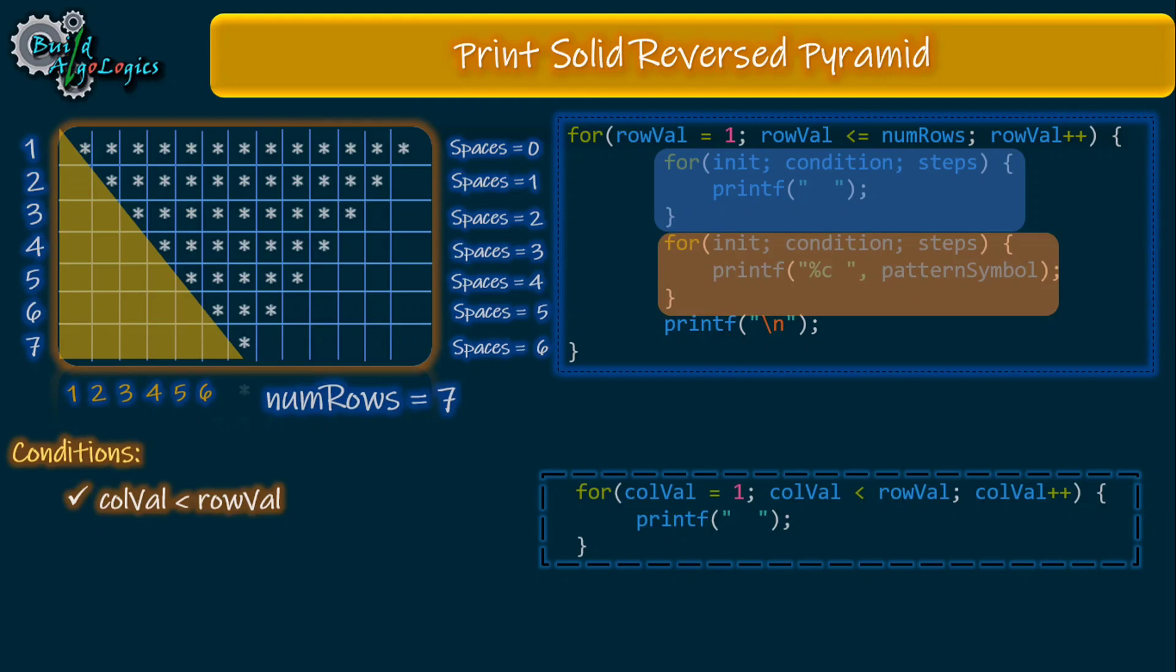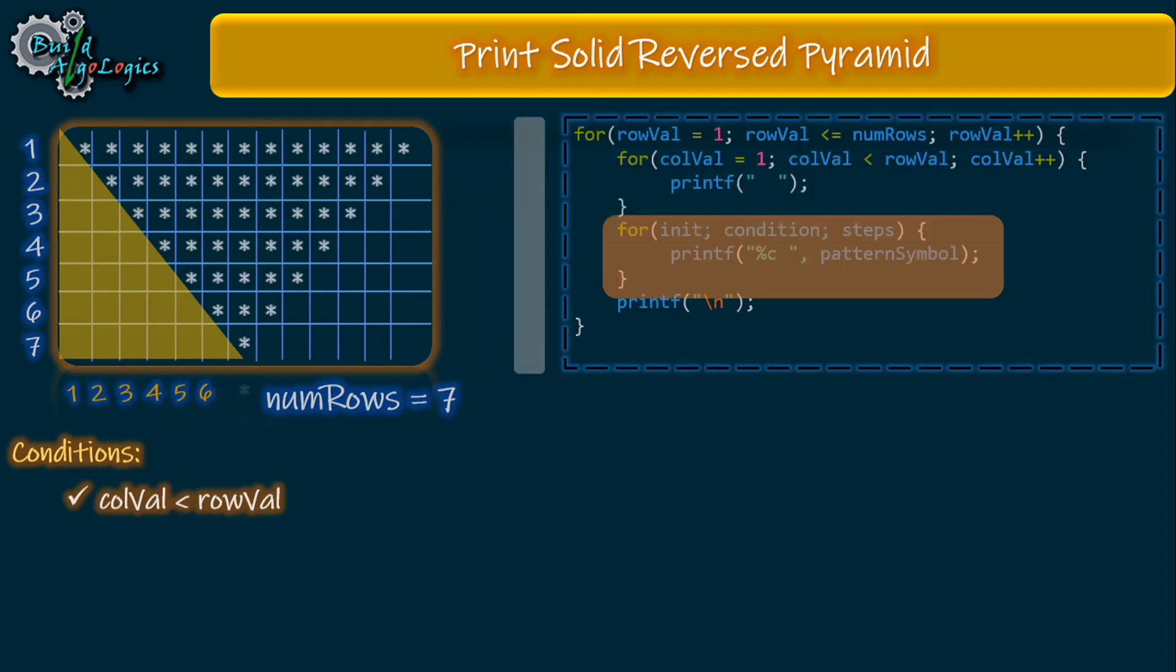Now let's derive some condition for our second inner loop to print these pattern symbols. For the first row, column value is 13, which is two times number of rows minus one. For the second row this value is 11, for the third row it's 9, and so on. If we carefully analyze, for each value of row, column value is decremented by two each time. For the first row it's 13, for the second row it's 11, for the third row it's 9, and so on.